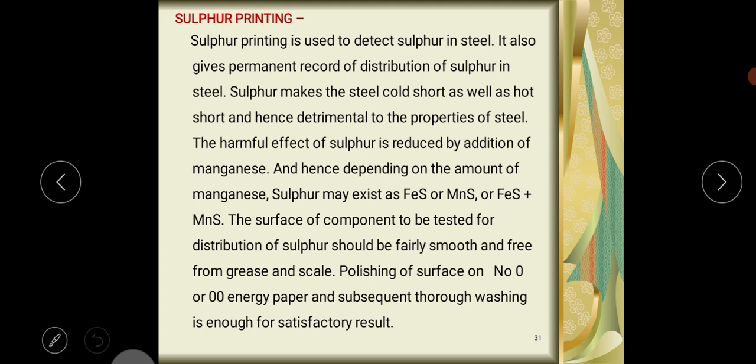Sulfur makes the steel cold short as well as hot short and hence detrimental to the properties of the steel. The harmful effect of sulfur is reduced by addition of manganese. Hence, depending upon the amount of manganese, sulfur may exist as FeS, MnS, or FeS plus MnS.